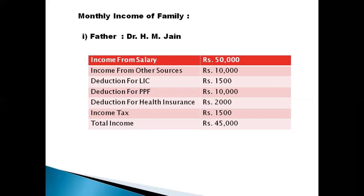The deductions include LIC, PPF, pension fund, health insurance, and income tax. The income from salary and other sources are added: Rs. 50,000 plus Rs. 10,000 equals Rs. 60,000. The remaining four deductions — for LIC, PPF, health insurance, and income tax — are subtracted from Rs. 60,000. So here you can see that Rs. 60,000 minus all the deductions gives a final total income of Rs. 45,000 for the father.